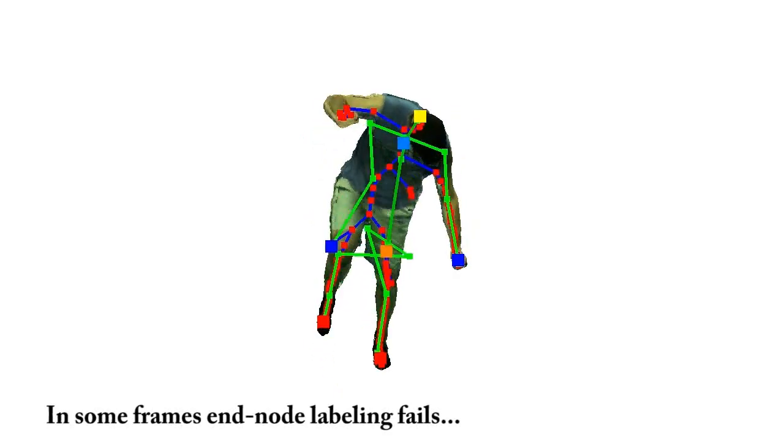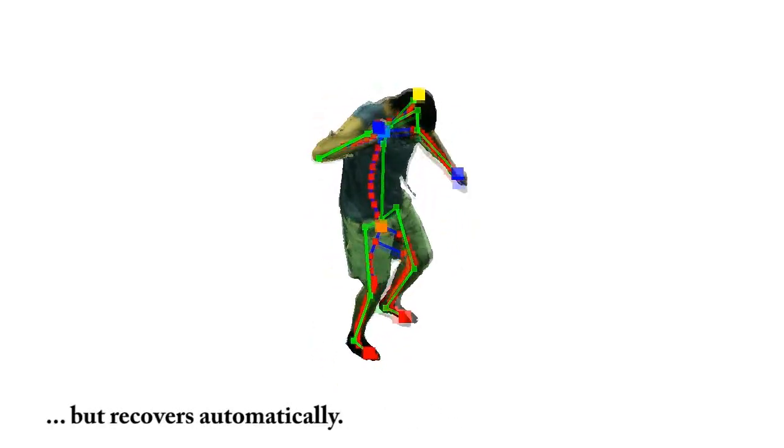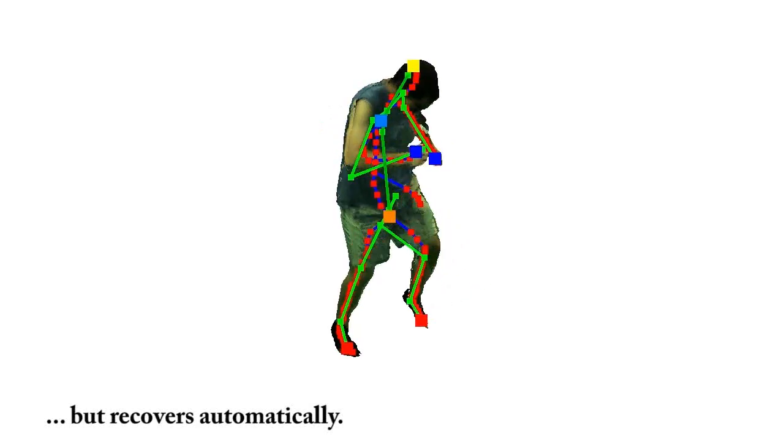In some frames the end node labeling fails but recovers automatically due to single frame processing without tracking.